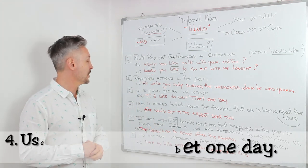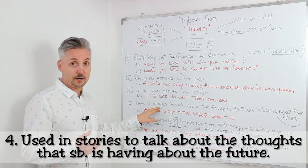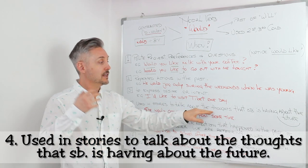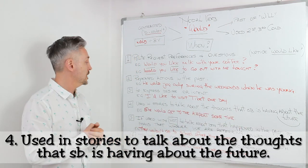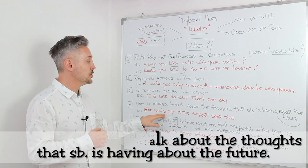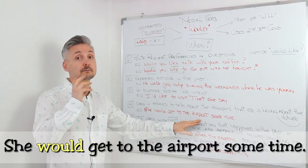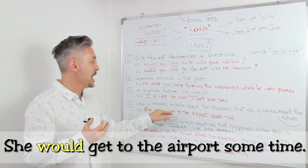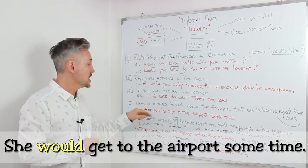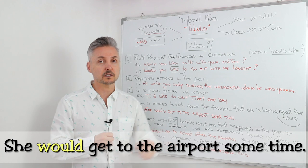Number four: used in stories to talk about the thoughts that somebody is having about the future. For example, she would get to the airport sometime. So this is a thought she had about her future.